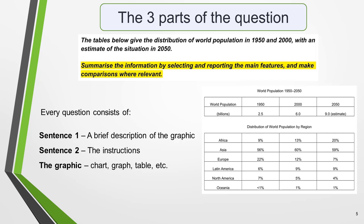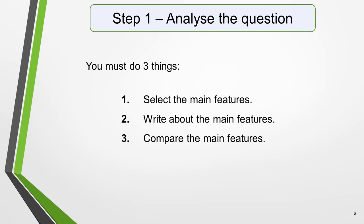The format of every academic task one question is the same. Every question consists of sentence one, which is a brief description of the graphic, sentence two, which is the instruction sentence, and the graphic itself — which might be the chart, the graph, the table, the map, etc. Sentence two tells you what you have to do. You must do three things: select the main features, write about the main features, and compare the main features. All three tasks refer to the main features of the graphic. You do not have to write about everything — just pick out two or three key features and you'll have plenty to write about.